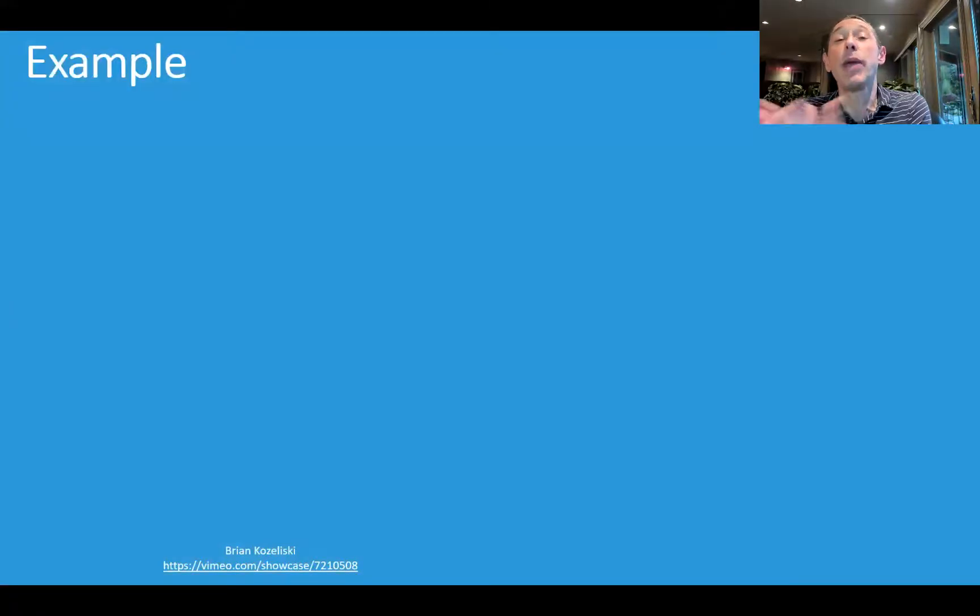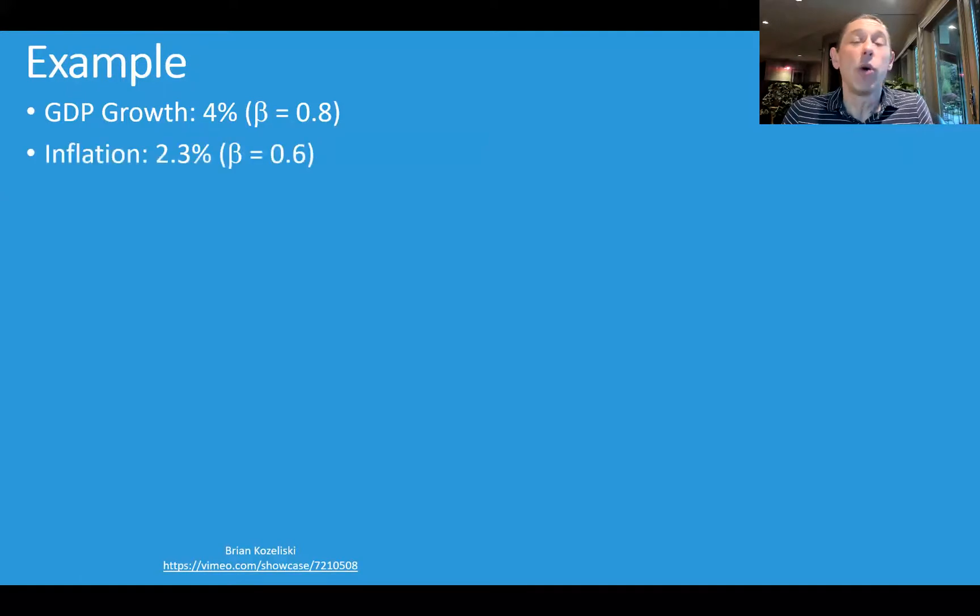Let's just do a quick example. Let's say we have an asset, and we have some exposures out there. We have some factors out there. So let's say we have GDP growth. Its expected return is 4%, and our asset has a beta versus it of 0.8. We've got inflation. We expect that to be 2.3%. Our asset has a beta exposure of 0.6 to that.